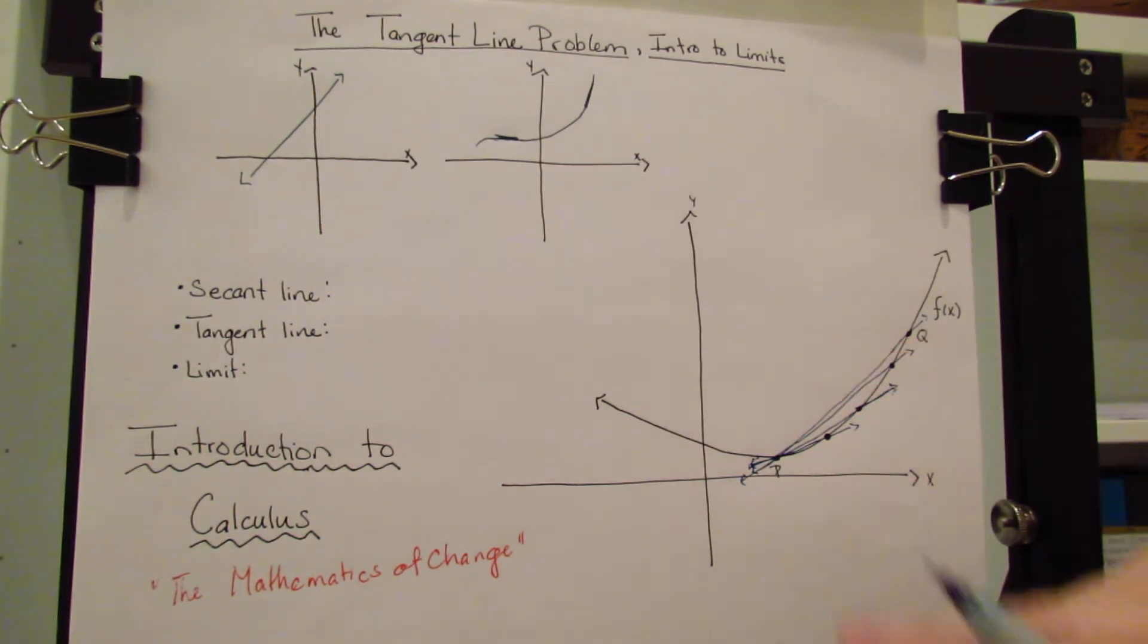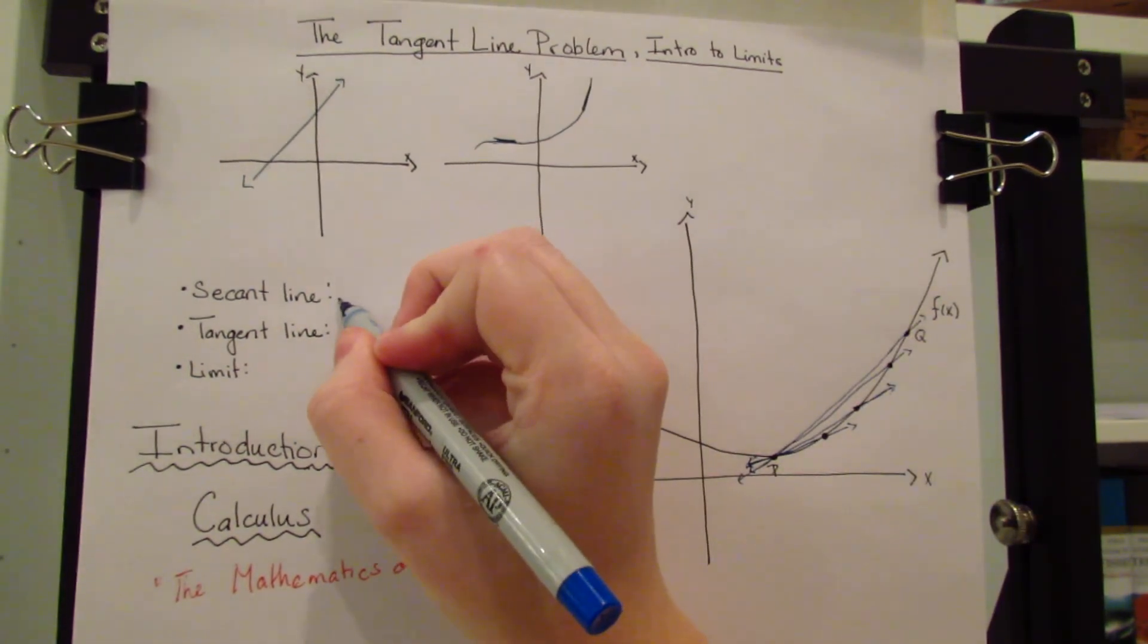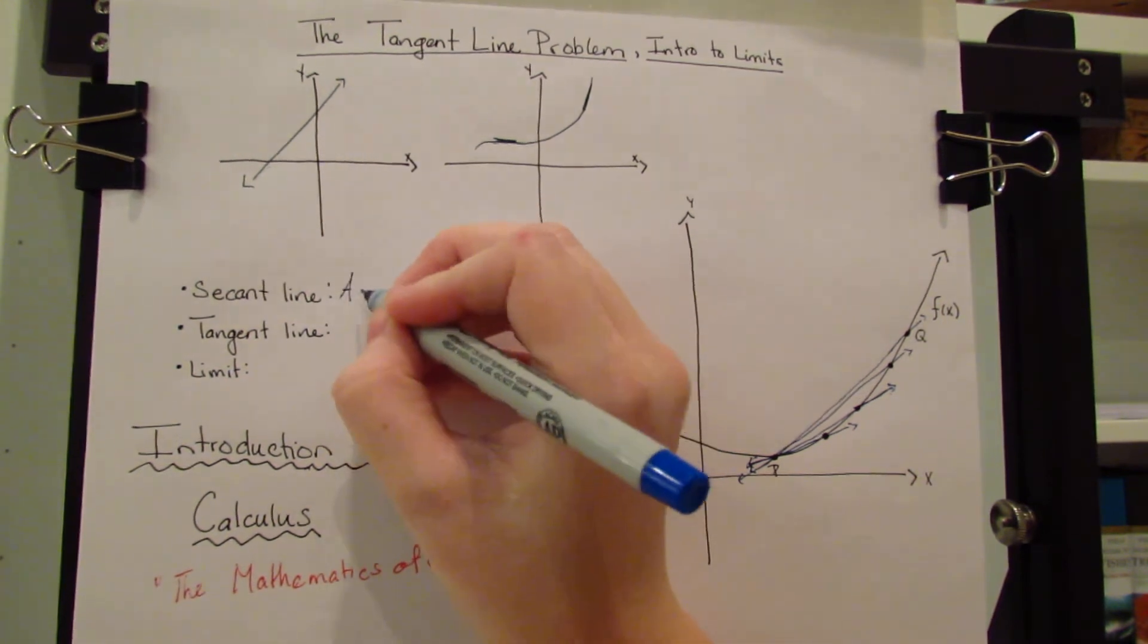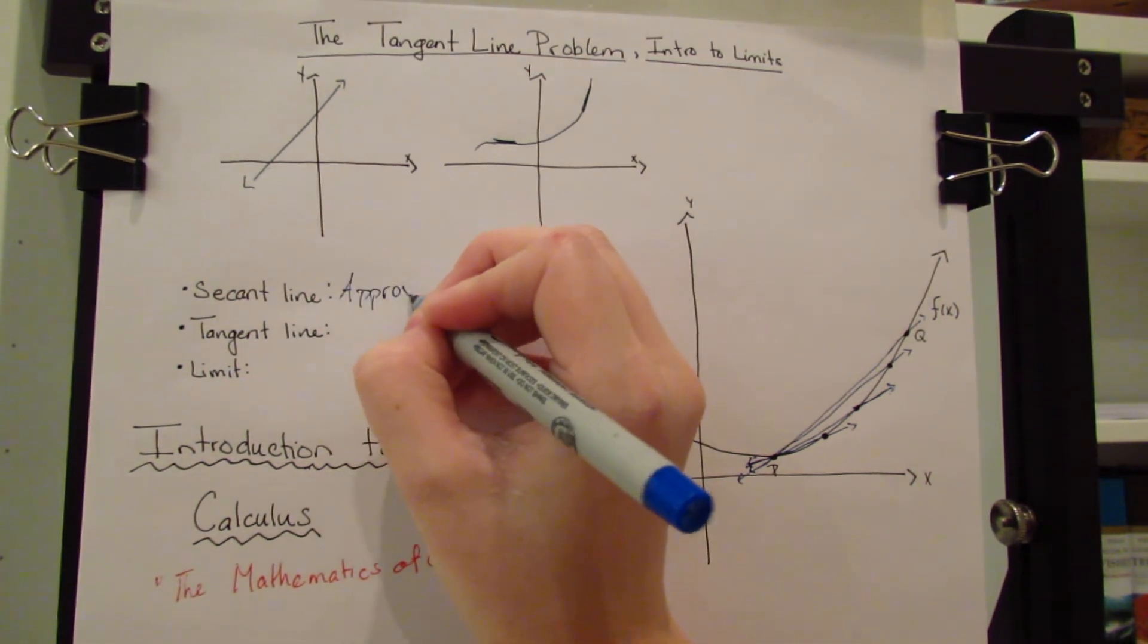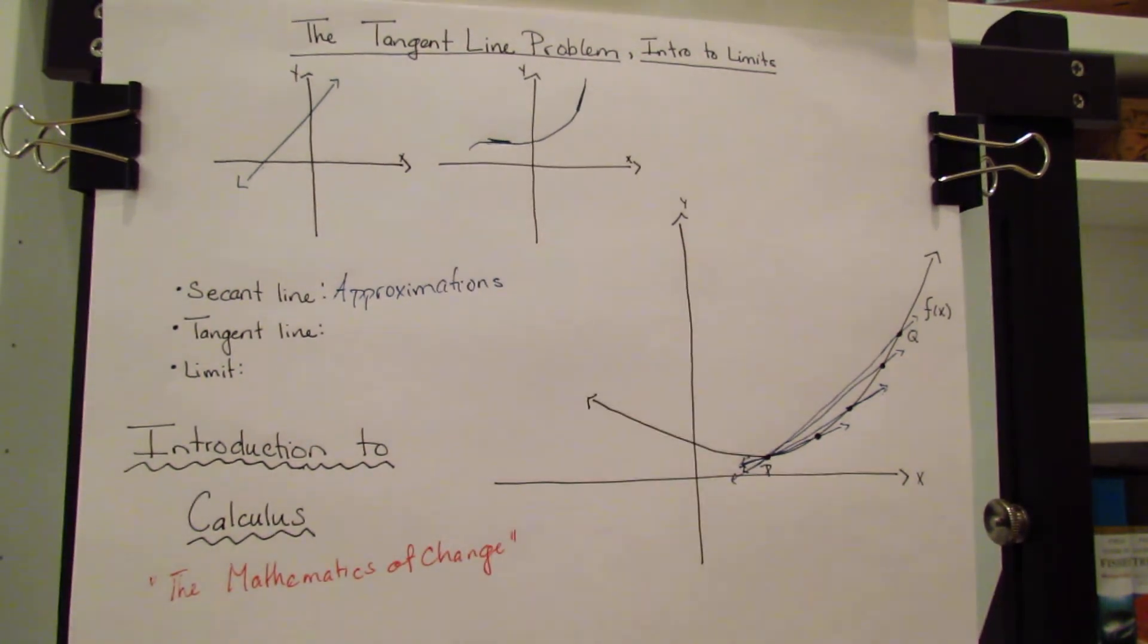All these lines that I've been drawing, these approximations are called secant lines. We'll call these approximations.